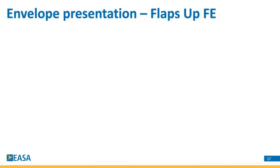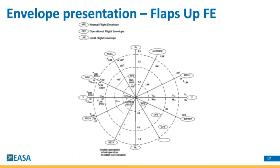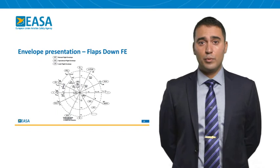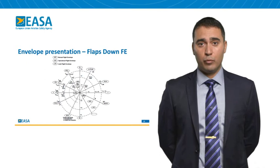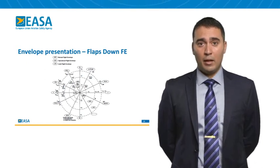The first presentation is the envelope for flaps up, showing different characteristic speeds on the X axis and concentric areas defining the different flight envelopes. The second example shows the flight envelopes with flaps down, where the characteristic speeds have changed compared to the flaps up configuration, and even other parameters may be affected depending on the aircraft design.